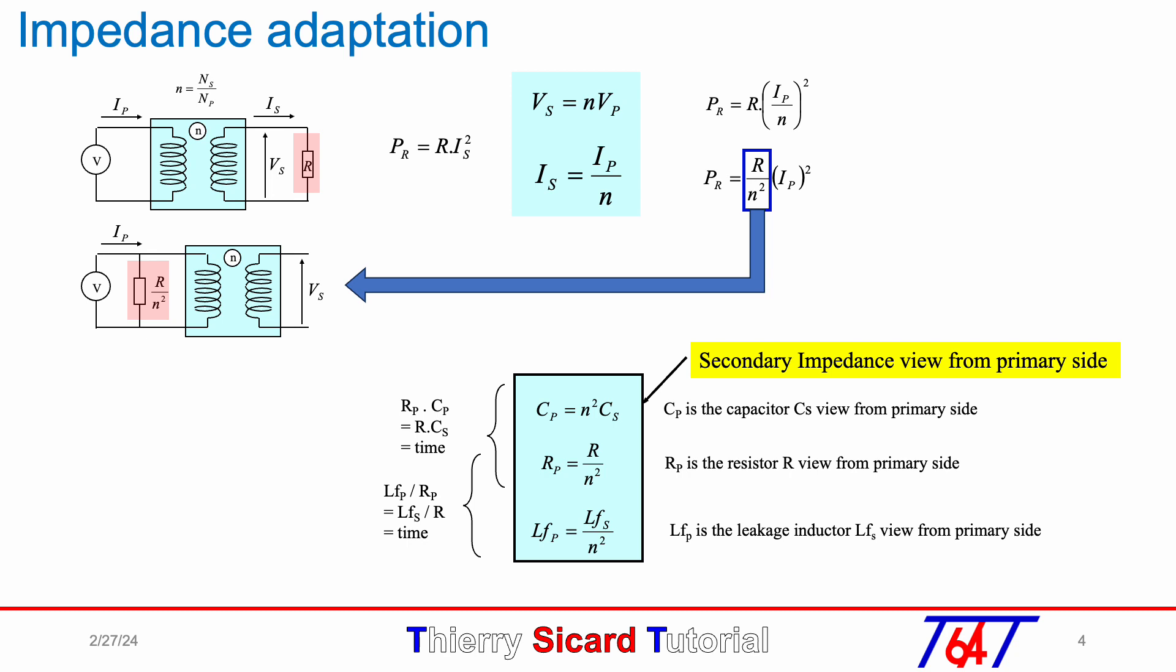Impedance adaptation is one of the key functions of the transformer, especially before solid state electronics. Indeed, at the time of vacuum tubes, the tube had high voltage but not too much current capability. So to drive the low impedance of the loudspeaker, a transformer was attached to the loudspeaker. The transformer was reducing voltage and increasing current. In this example, an 8 ohm loudspeaker impedance could be viewed from the tube as a 3.2 kilohm load.